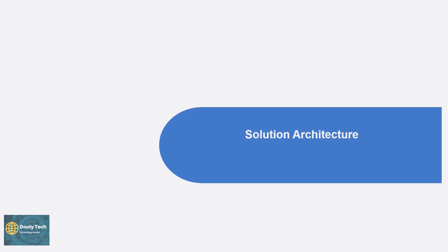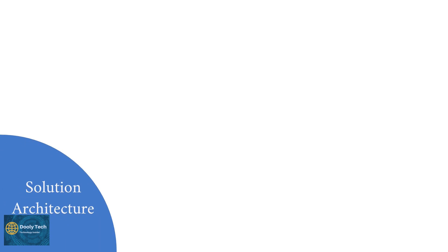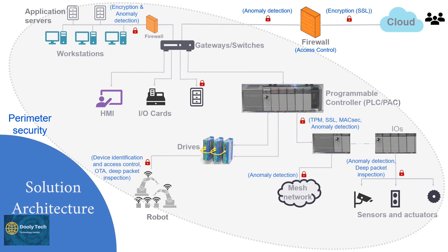Now let's look at the solution architecture. This solution architecture is the same as the layout shown — devices in the lower layer are connected to controllers, which connect to gateways or switches, which communicate with the cloud through a firewall layer representing data encryption and security. That's a basic solution architecture. Thanks for watching — please subscribe, like this video, and let us know your questions in the comment section. We'll try to answer them as soon as possible. Thank you.